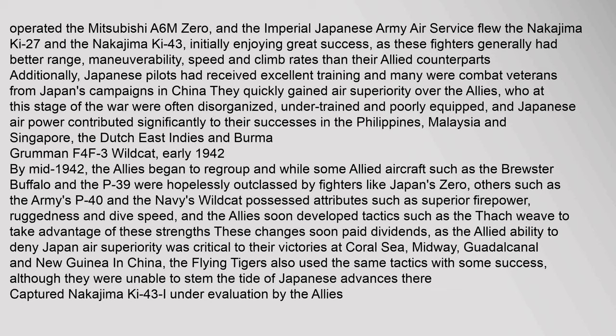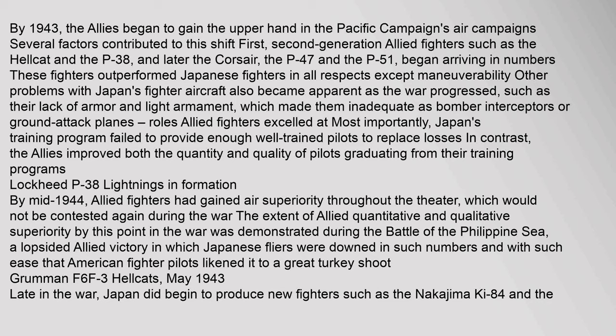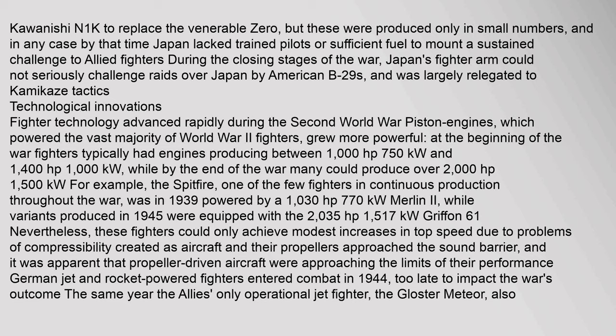By 1943, the Allies began to gain the upper hand. Second-generation Allied fighters such as the Hellcat, P-38, and later the Corsair, P-47, and P-51 began arriving in numbers, outperforming Japanese fighters in all respects except maneuverability. Problems with Japan's fighter aircraft also became apparent — their lack of armor and light armament made them inadequate as bomber interceptors or ground attack planes. Japan attempted to replace the Zero with the Kawanishi N1K, but these were produced only in small numbers. During the closing stages of the war, Japan's fighter arm was largely relegated to kamikaze tactics.